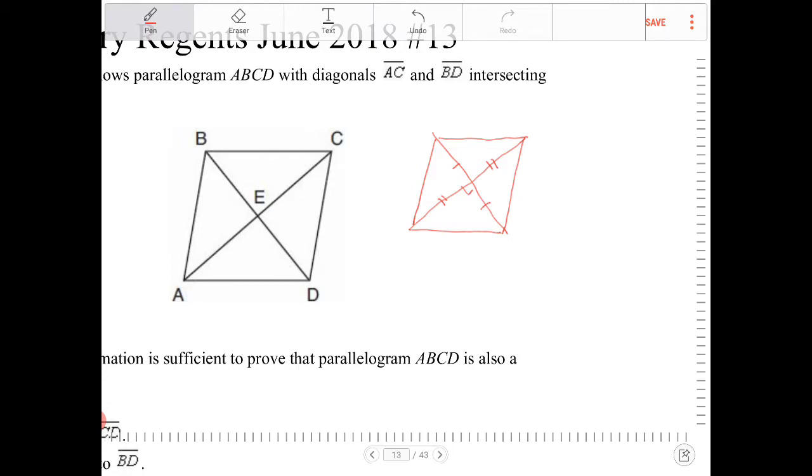Another thing that makes a parallelogram a rhombus is the fact that all four sides are the same length.